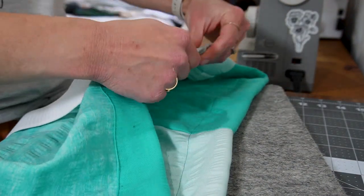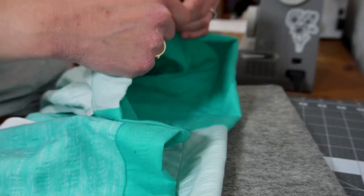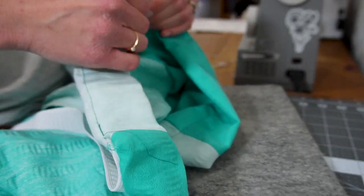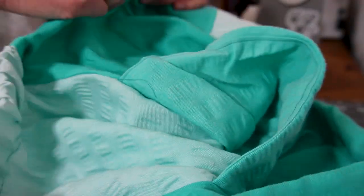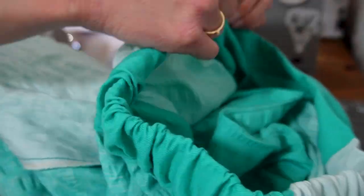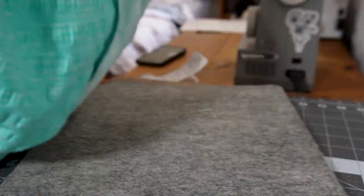Now I'm going to use my bodkin to attach to the end of my elastic and thread it all the way around the waistband panel. This will gather up the fabric and make it that really nice gathered skirt look and give you a really comfortable waistband.